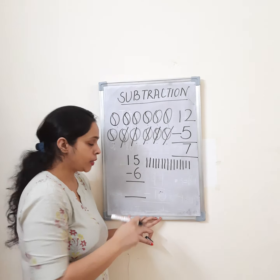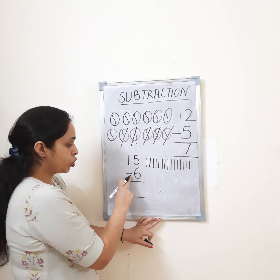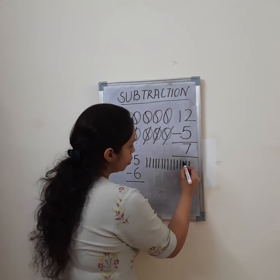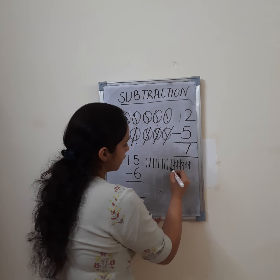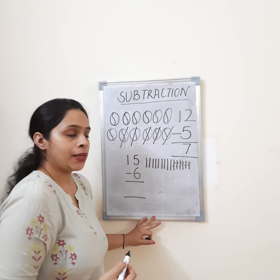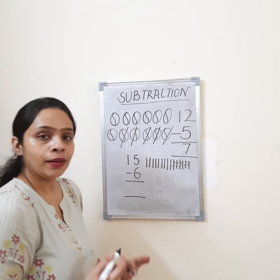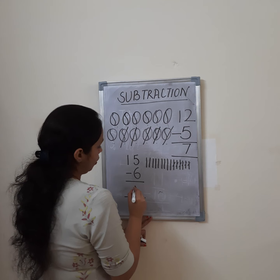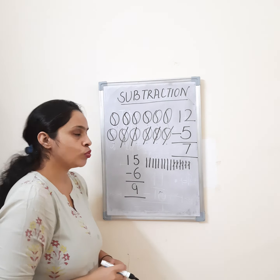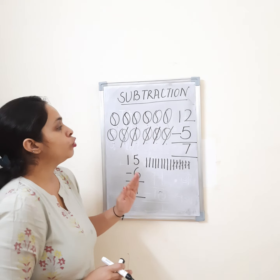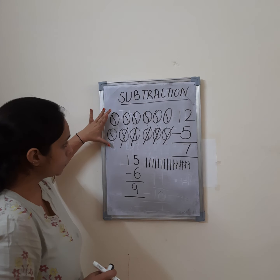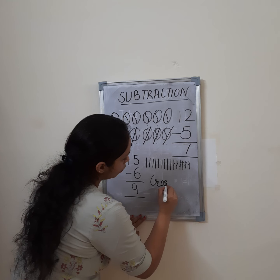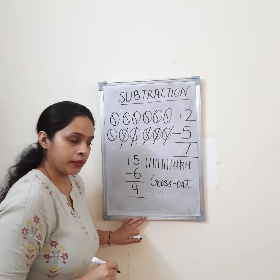Now, how many lines do you have to cut from the 15 you drew? You need to cross out 6 lines. Make small crosses — 1, 2, 3, 4, 5, 6. We have crossed out 6. Now count how many lines remain without a cross: 1, 2, 3, 4, 5, 6, 7, 8, 9. So 15 minus 6 is equal to 9. We did subtraction two ways: with pictures and with crossing out.